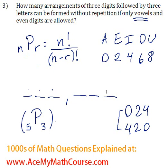Great, so we are going to multiply that by the amount of arrangements that we have for the three letters. So we have five vowels as well, we are going to pick three of them.